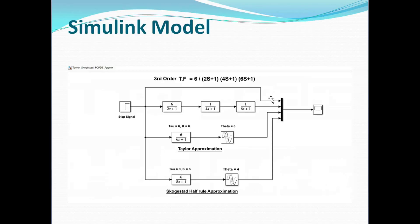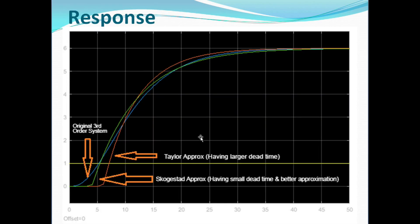We will now see the response by looking at the Simulink model. This is the Simulink model I have prepared, which I will show in MATLAB also. A step signal has been given to the original third order system, along with the Taylor first order approximation and the Skogestad half rule first order approximation. We will see the output in the scope. The response of the three different systems will appear: the original third order system, the Skogestad approximation, and the Taylor approximation.